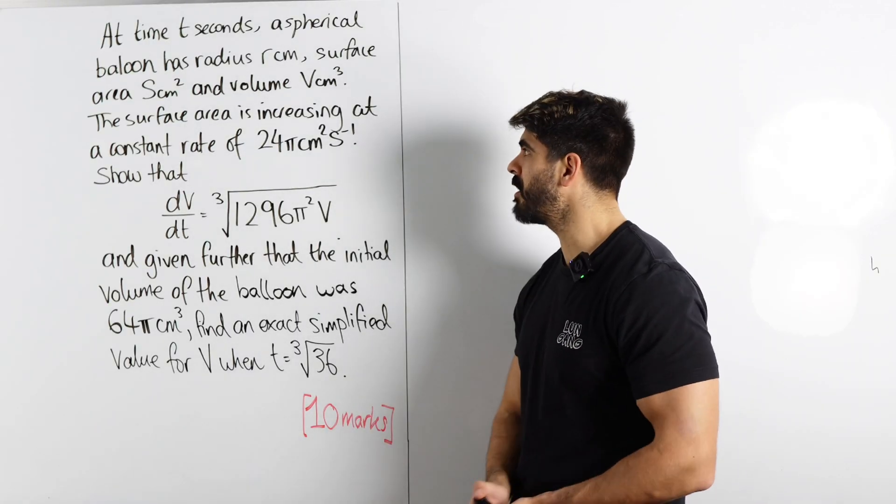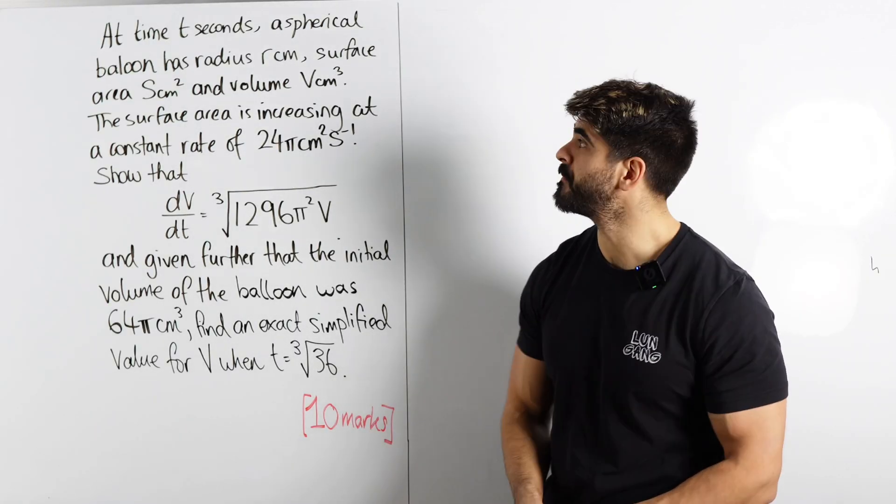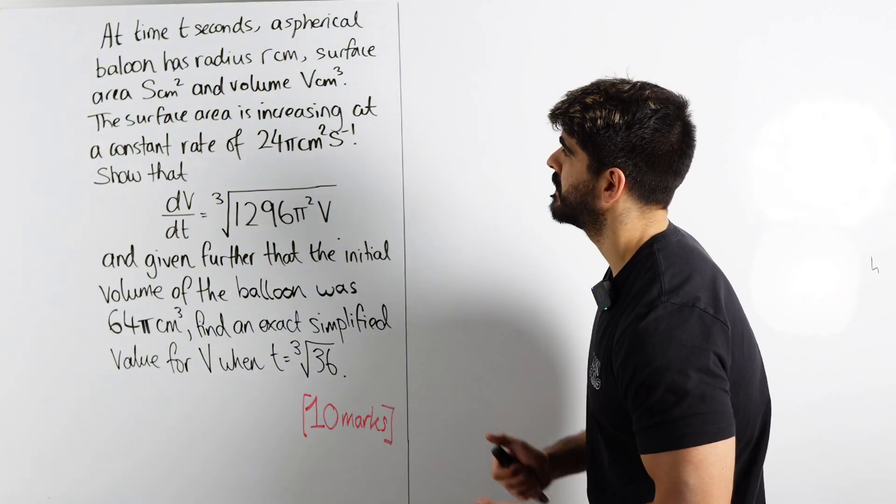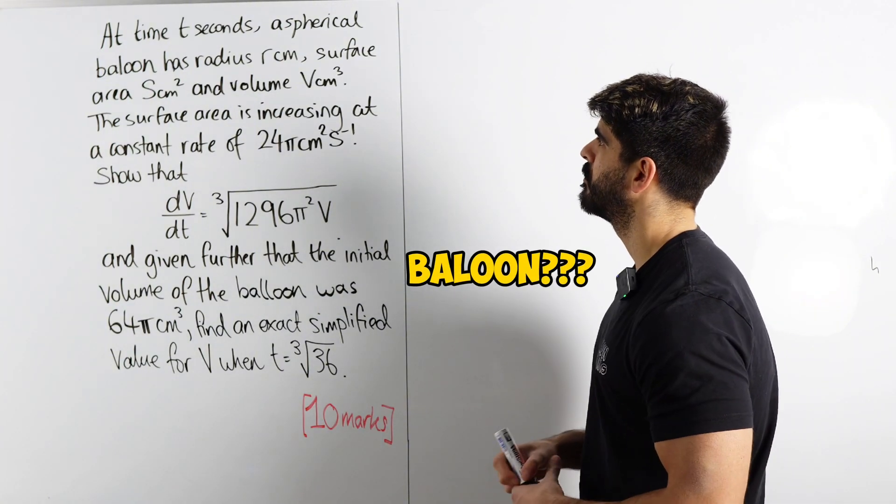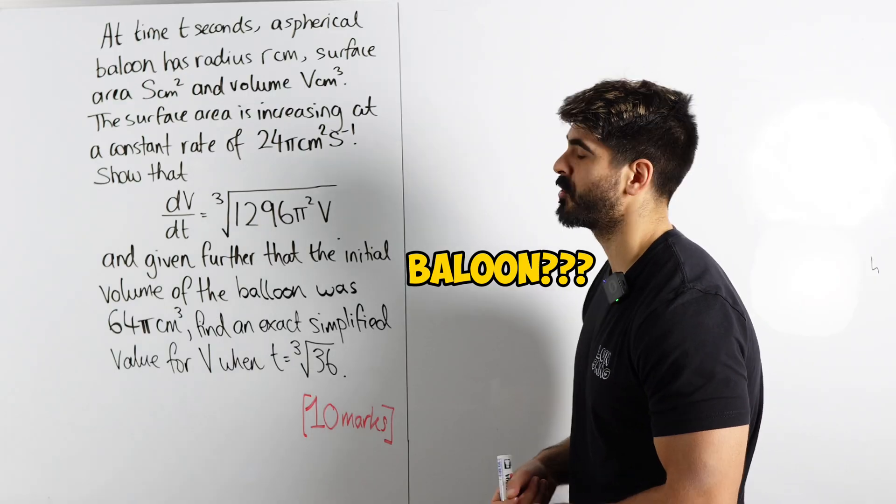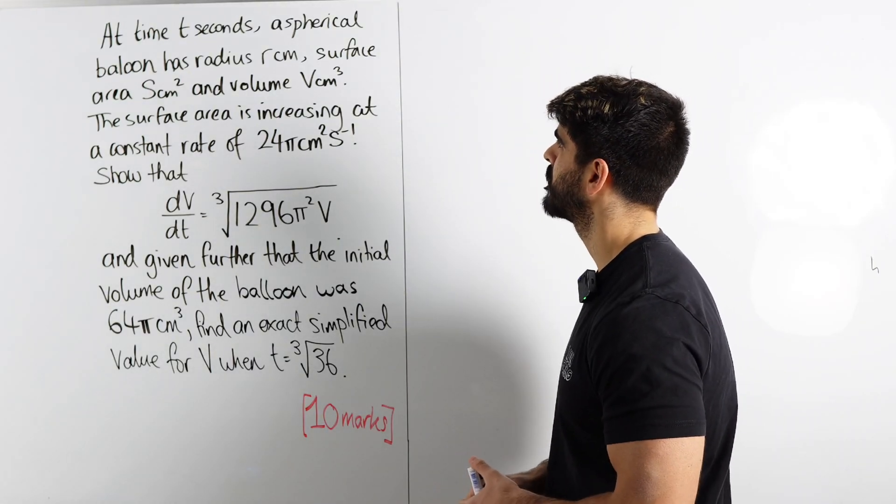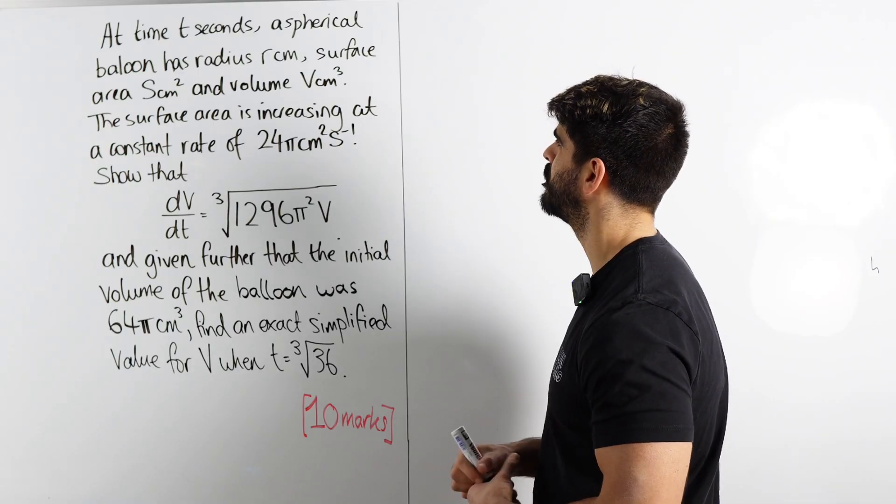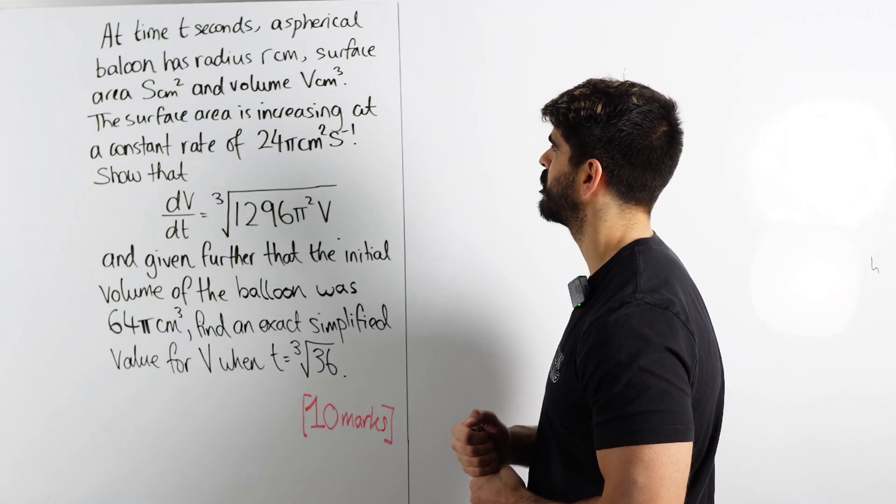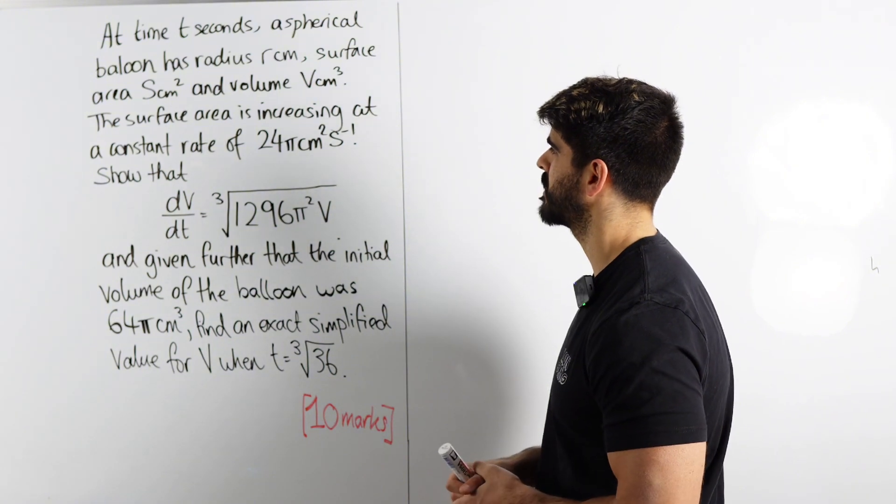So, for 10 marks, we've got a lot of yap. It says, at time t seconds, a spherical balloon has radius r, surface area s, and volume v. The surface area is increasing at a constant rate of 24π centimeters squared per second.